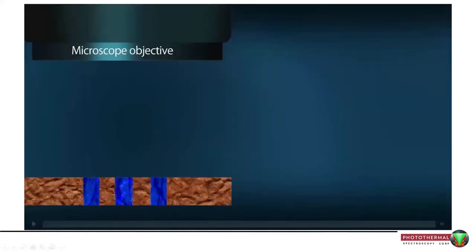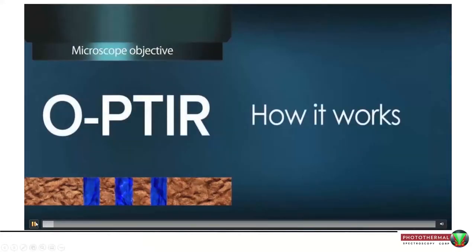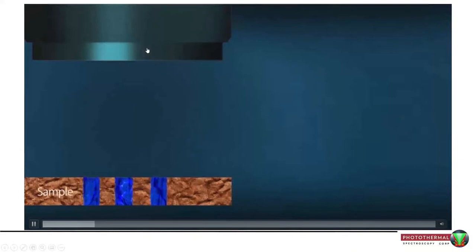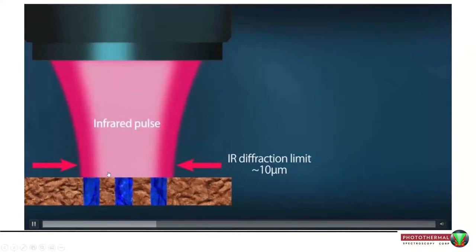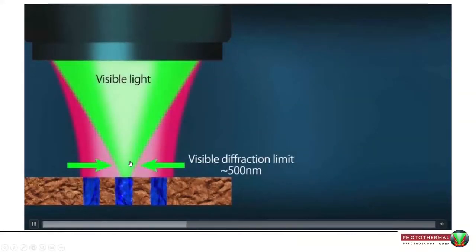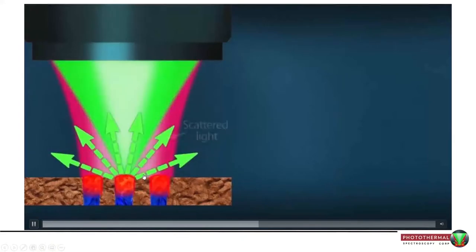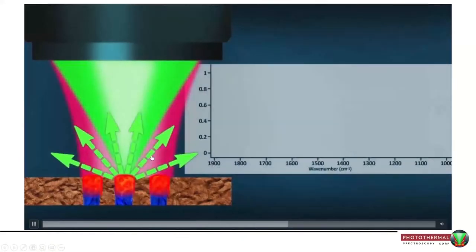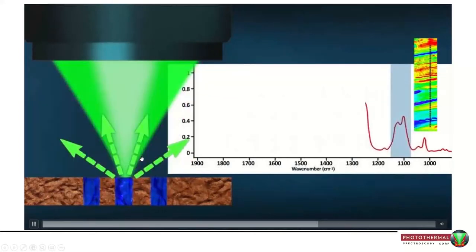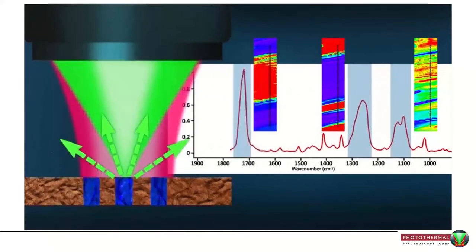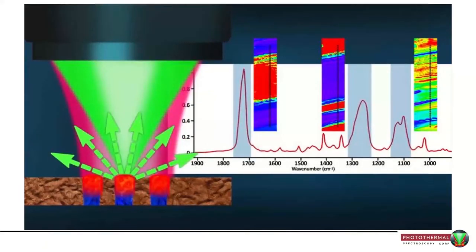How does this technique work? It starts with a reflective Cassegrain-style microscope objective, through which we shine a pulsed infrared laser beam — being infrared, it's fairly broad, maybe around 10 microns. At the same time we shine in our probe, the green beam at about 500 nanometers. The infrared generates thermal expansion, and that thermal expansion changes the way the green light is reflected or scattered back. As we tune our infrared laser from one wavelength to another, we monitor the intensity of the green light reflected back, and from that we calculate out a pure infrared spectrum collected in reflection mode.